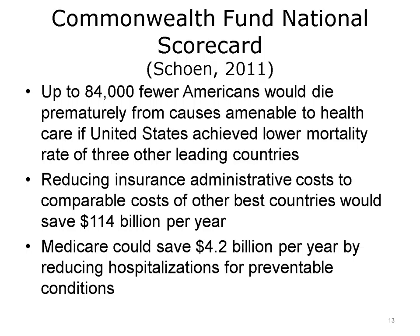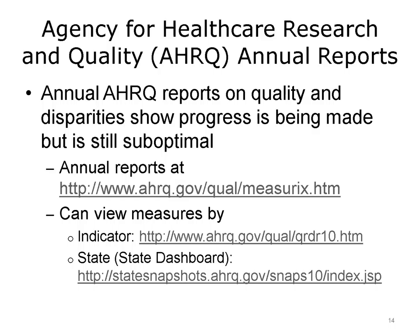Other studies, such as those done by Schoen and colleagues with the Commonwealth Fund, have found that the quality of care for patients with chronic diseases is no better — and in many ways worse — in the United States than in other developed countries. Their most recent national scorecard found that up to 84,000 fewer Americans would die prematurely if the U.S. achieved the lower mortality rate of three other leading countries, that reducing insurance administrative costs to the level of other best countries would save $114 billion per year, and that Medicare could save $4.2 billion per year by reducing hospitalizations for preventable conditions. The Agency for Healthcare Research and Quality, AHRQ, also puts out annual reports on health care quality and disparity showing that progress is being made but is still suboptimal.